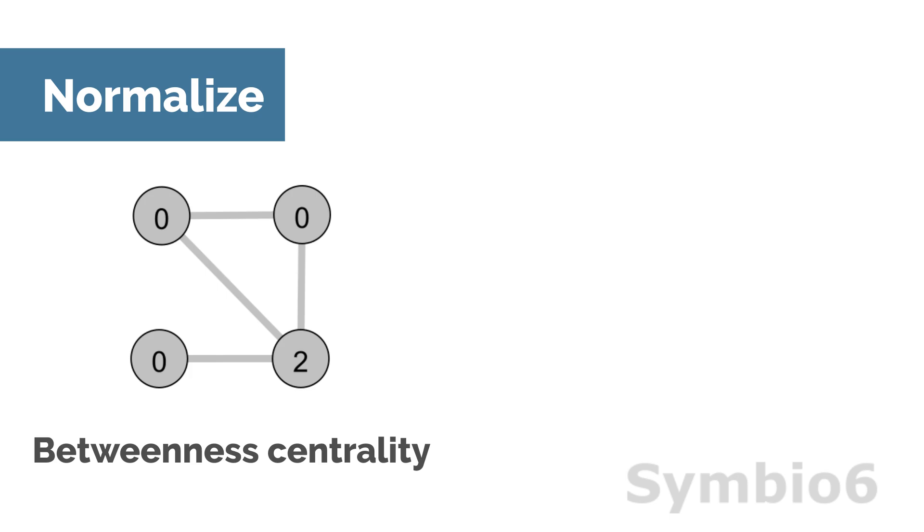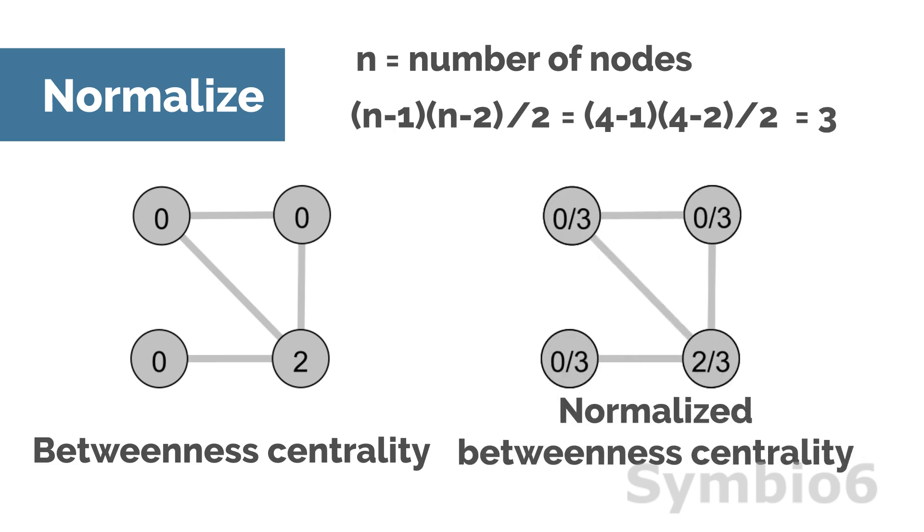We do this by dividing the betweenness score by the number of pairs of nodes not including. Since undirected networks are symmetric, we have to divide these by two. This rescales all scores in the range of zero to one. Now networks have the same scale and can be compared.